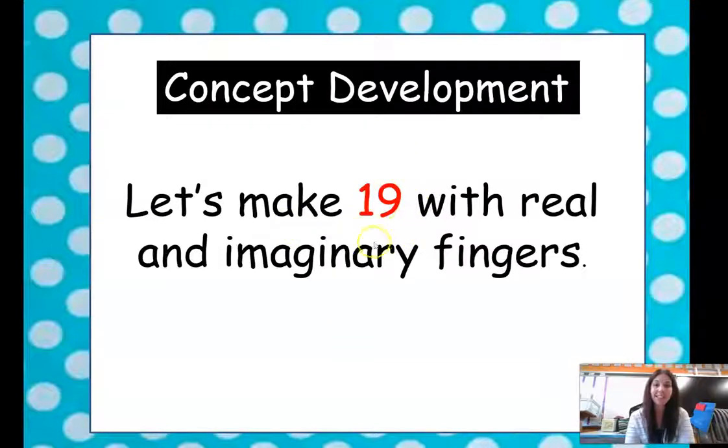Let's make 19 with real and imaginary fingers. We're going to count our fingers: 1, 2, 3, 4, 5, 6, 7, 8, 9, 10. We have 10 together and we want to make 19, so that's 10 and 9 more. We have a 10 and 9 more to make 19 — it's a group of 10 and a group of 9 ones.